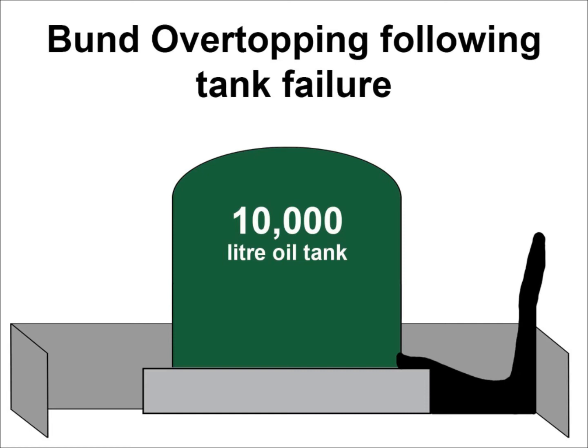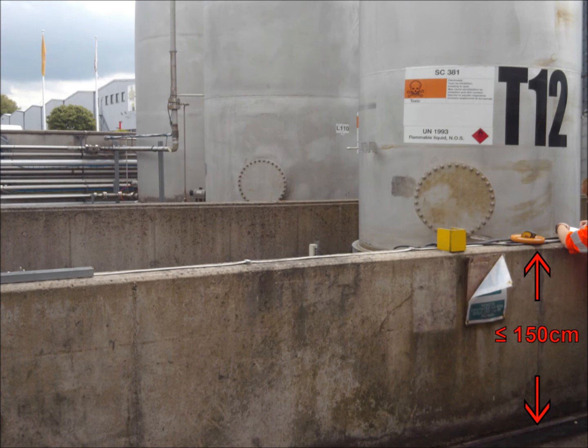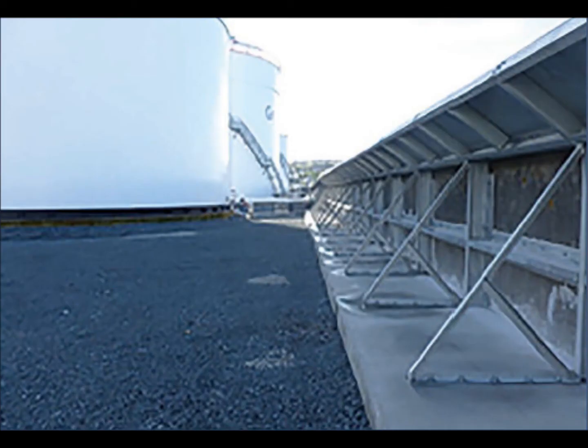The tidal wave effect is where a catastrophic failure causes a mass release of liquids which can overtop the walls. However, constructing taller walls can cause access issues, limit ventilation, and make firefighting difficult. For this reason, walls should be constructed no taller than 1.5m wherever possible. To help combat the tidal wave effect, you can install additional infrastructure to the bunds, such as deflector plates, which limit the amount of liquid which could overtop the bund in the event of a catastrophic failure.